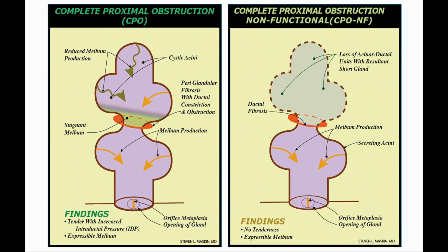This slide on the left shows perioductal fibrosis causing complete proximal obstruction deeper in the gland to at least one meibum-producing acinus. Although this gland expresses meibum and appears healthy on examination, it is actually not healthy as there is deep occult duct blockage. This blockage leads to elevated intraductal pressure and lid tenderness. If the blockage is not released, the elevated pressure behind the obstruction will cause the proximal gland to atrophy, leading to a short truncated gland. Thank you for your attention and please enjoy the article.